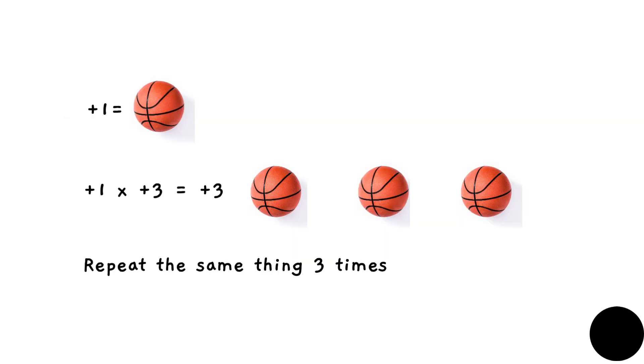Let's look at an example. Here, plus one is a basketball which is full of air. Now if we multiply +1 times +3, what we are saying is that we have to repeat the plus one three times. So the same thing we have to repeat three times. So the ball that is full of air, if we repeat it three times we get three. So multiplication is basically the addition which is repeated as many times as is given.